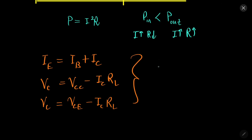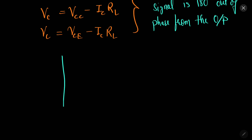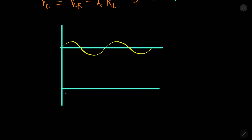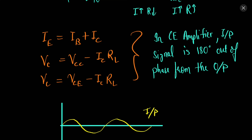An important property of the common emitter amplifier is that the input signal is 180 degrees out of phase from the output signal. So if we draw the input and output graphs, the output will be 180 degrees out of phase with the input.